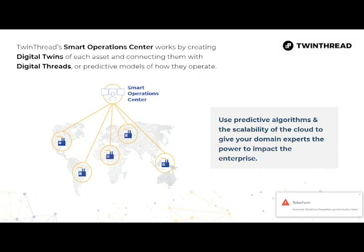Twin Thread creates what we call a smart operations center by first creating digital twins of each of your assets. The digital twin is the digital representation of your physical assets, connected with what we call digital threads — predictive models that describe how those particular pieces of equipment operate. By using predictive algorithms and the scalability of the cloud, this is a tool set your domain experts can use to apply their expertise very quickly across the enterprise. It's really the only practical way to have a single domain expert working efficiently across many, many processes.